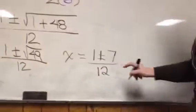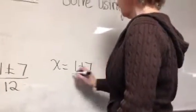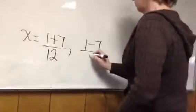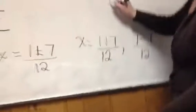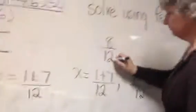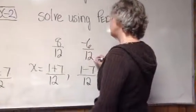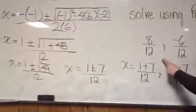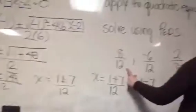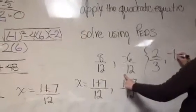How you translate this is x equals 1 plus 7 over 12 and x minus 7 over 12. So what's 1 plus 7 over 12? 8 over 12. 1 minus 7 over 12? Negative 6 over 12. Can you simplify those? Yes. Okay, so what's 8 over 12? 2 thirds. And what's negative 6 over 12? Negative 1 half.